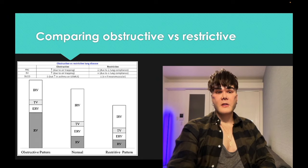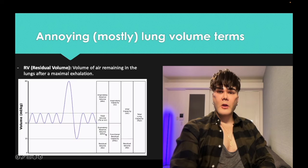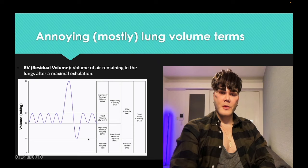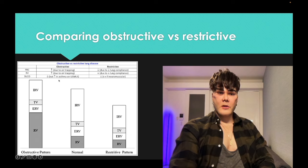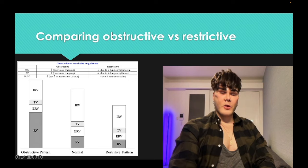Functional residual capacity is ERV plus RV. Looking at the graph: after a casual exhalation, you forcibly expire more — that's your expiratory reserve volume — then the residual volume is the air left after maximal expiration. FRC is the sum of those two. FRC is increased in obstructive due to air trapping increasing residual volume, and decreased in restrictive due to decreased lung compliance.